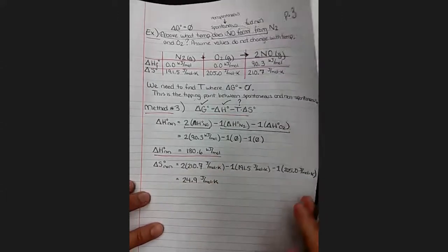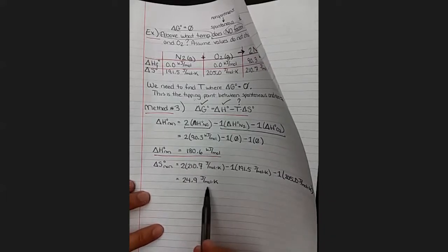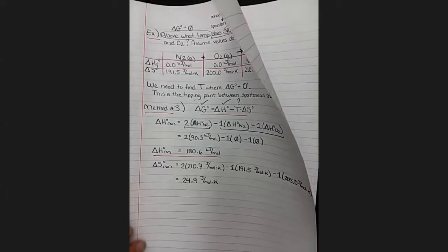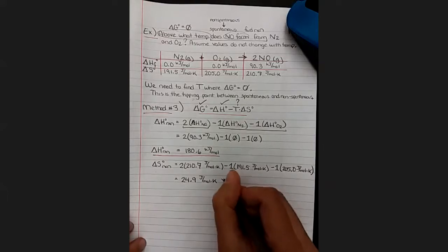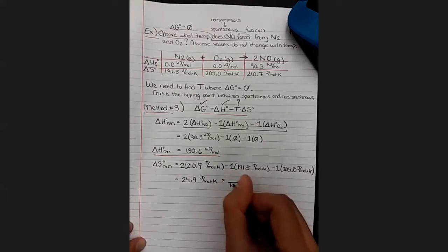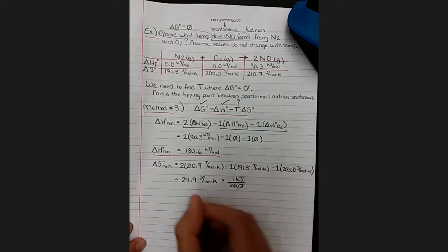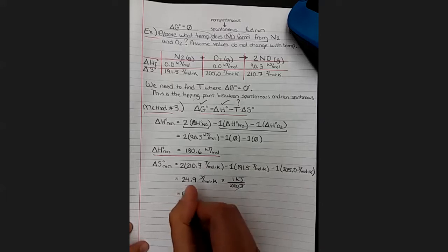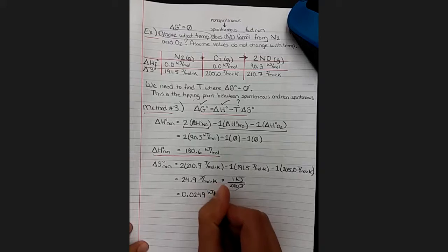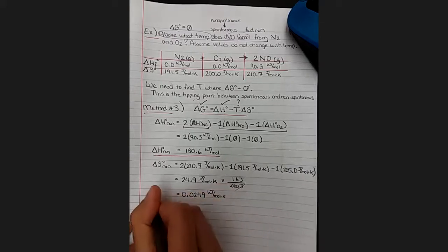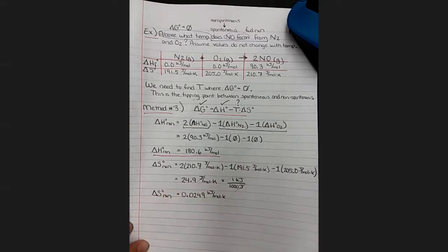And just looking at my previous number with the red underline and seeing that this one is in terms of kilojoules and this one is in terms of joules, I can already tell that it's going to be most helpful if we could have them in the same unit. So I'm just going to go ahead and convert this one to kilojoules while I'm here. Okay, so that's going to give me 1,000 times smaller: 0.0249 kilojoules per mole kelvin. And that is my standard entropy change for the reaction.